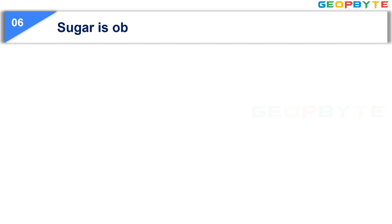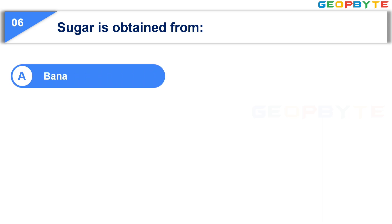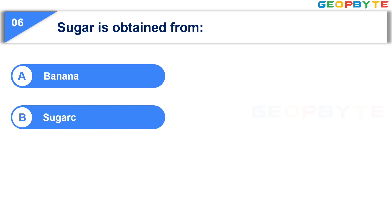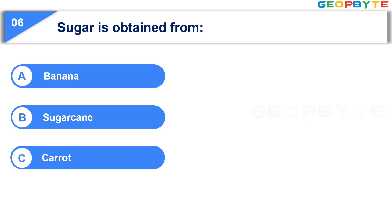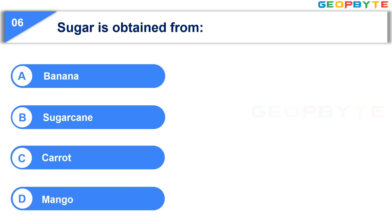The sixth question is: Sugar is obtained from. Option A, Banana. Option B, Sugarcane. Option C, Carrot. Option D, Mango. Your time starts now.